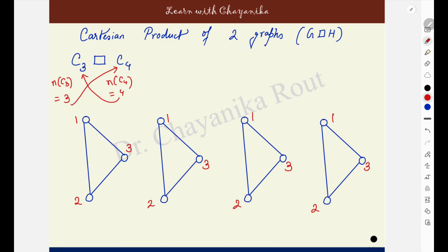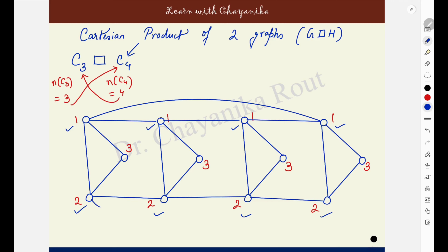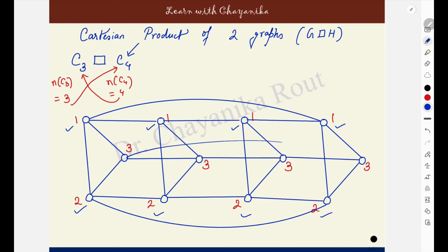Then, all the vertices having the same labeling — for example, these 4 vertices all labeled 1 — use these vertices with the same labeling to create copies of the other graph, C4. I will use these 4 vertices and create a copy of C4, which is a cycle of length 4. Similarly, the vertices labeled 2 are used to create another copy of C4, and the vertices labeled 3 are used to create yet another copy of C4. Finally, in the graph you will find 4 copies of C3 and 3 copies of C4.